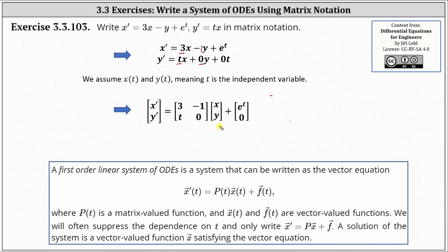And then we have times the vector-valued function x of t, which has components x and y. And then we have plus the vector-valued function f of t, expressed as a two-by-one column matrix, where the entries are e to the t and zero.